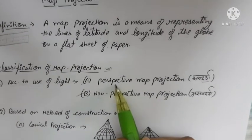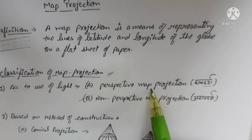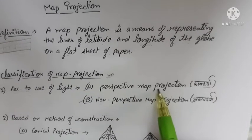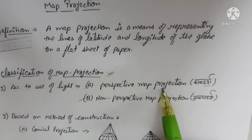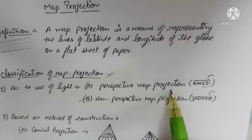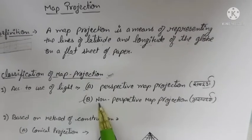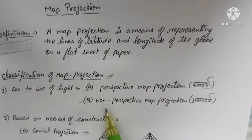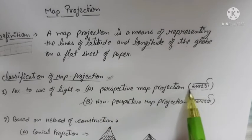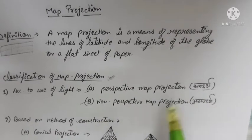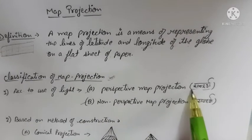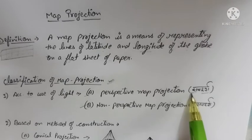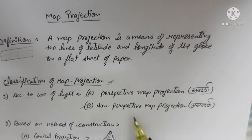Talking about perspective map projection: this map projection is formed using light. And non-perspective map projections are ones that are constructed using mathematical methods and are slightly modified.